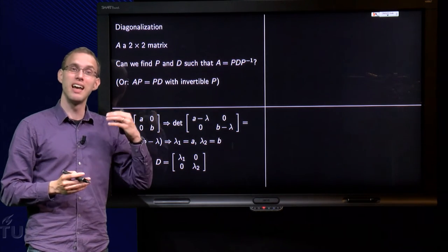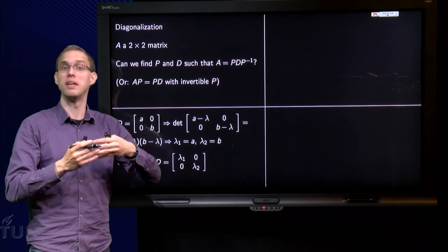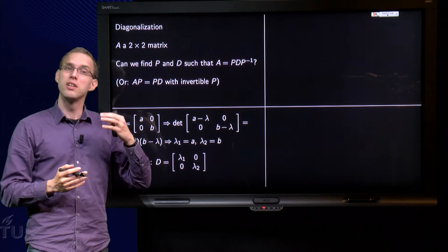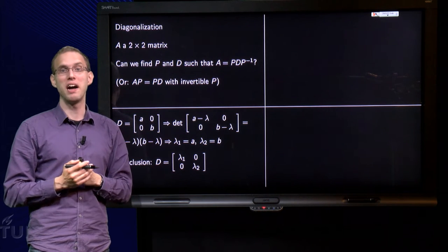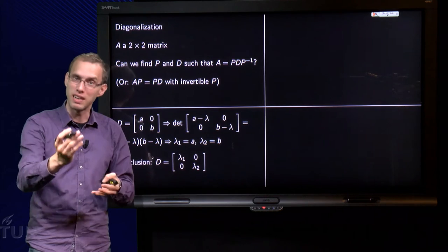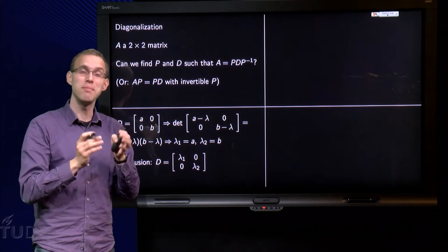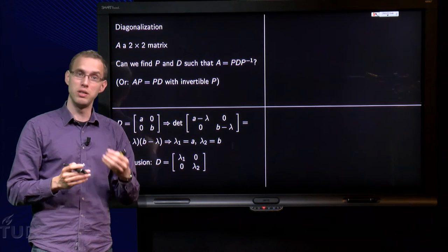we know that the eigenvalues of A and D have to be the same, because they are similar. Similar matrices have the same eigenvalues. So if I want to find a matrix D which is similar to A, I need the eigenvalues of D to be the same as the eigenvalues of A. So what do I do?